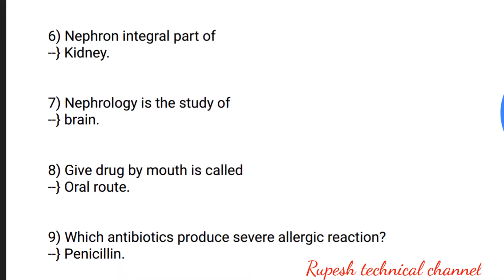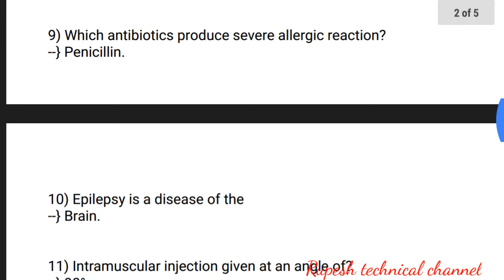Question number 4: protective covering of the brain — meninges. Question number 5: urea is produced in the urinary bladder. Question number 6: nephron is an integral part of the kidney. Question number 7: nephrology is the study of the brain.